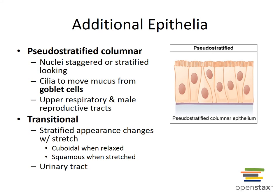Transitional epithelium resembles both stratified squamous and stratified cuboidal. The basal cells are generally cuboidal or columnar, and the surface cells are dome-shaped or squamous-like depending on the degree of organ stretch. It functions because it stretches readily and permits distension of urinary organs. It is found lining the ureters, urinary bladder, and part of the urethra.